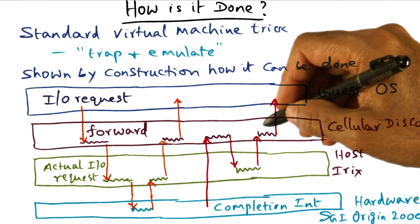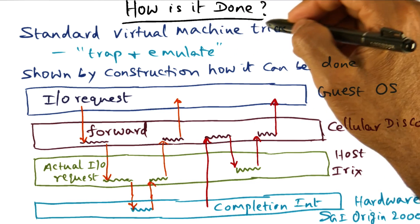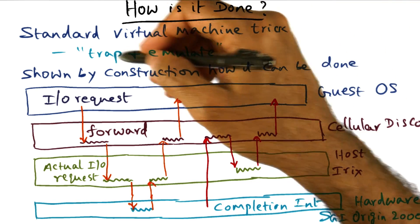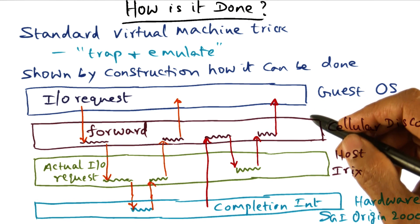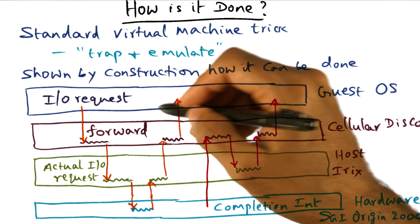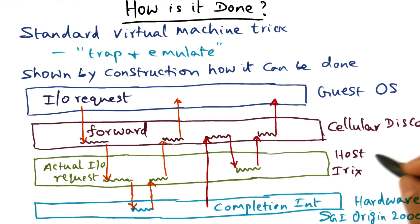The way virtualization is done is a standard virtual machine trick, and that is trap and emulate. What they've done is shown by construction that it is possible to do this and do this efficiently. Let's walk through what happens on an I/O request.